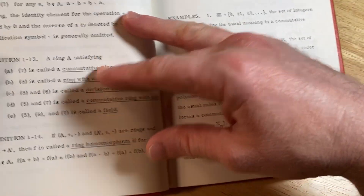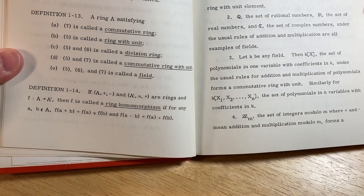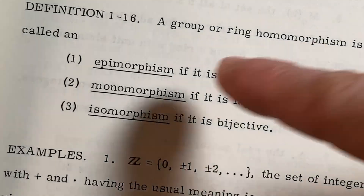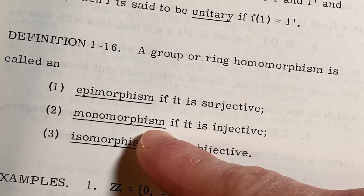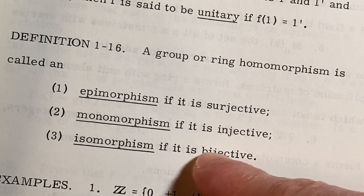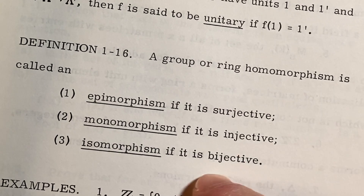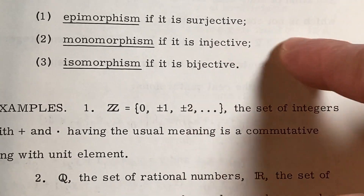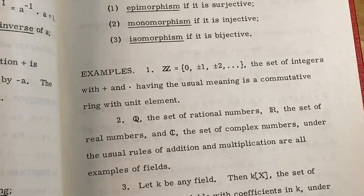He defines a ring here, and more things: ring with unit, division ring, commutative ring with unit, field, ring homomorphism. An epimorphism is a group or ring homomorphism that is surjective or onto. A monomorphism is a homomorphism that is injective or one-to-one. An isomorphism is a homomorphism that is bijective. Because surjective equals onto, injective equals one-to-one, and bijective means a one-to-one correspondence.